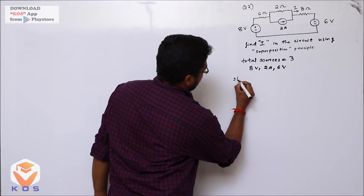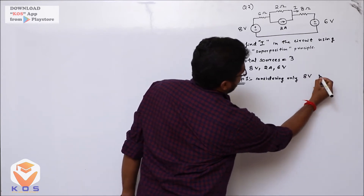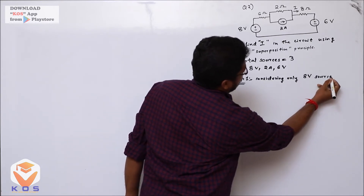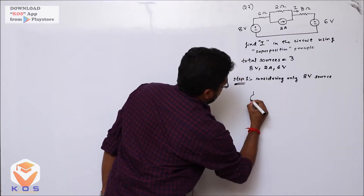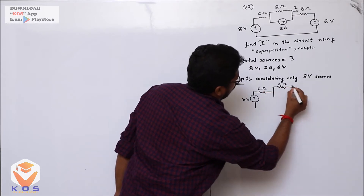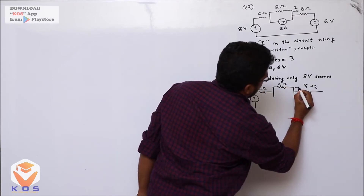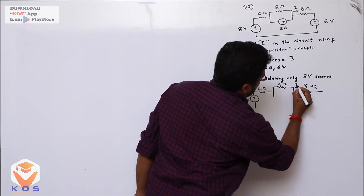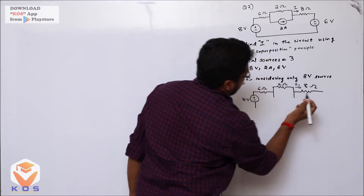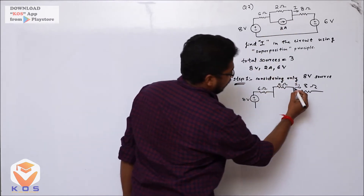Step 1: Consider only the 8V source. The circuit contains a 6 ohm, 2 ohm, and 8 ohm resistor. We assign the current direction and label this partial current I1.